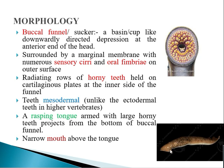The buccal funnel is surrounded by a marginal membrane which has a number of sensory projections called cirri and a number of oral fimbriae. These cirri and oral fimbriae help in food collection and are all located on the marginal membrane surrounding the buccal funnel.